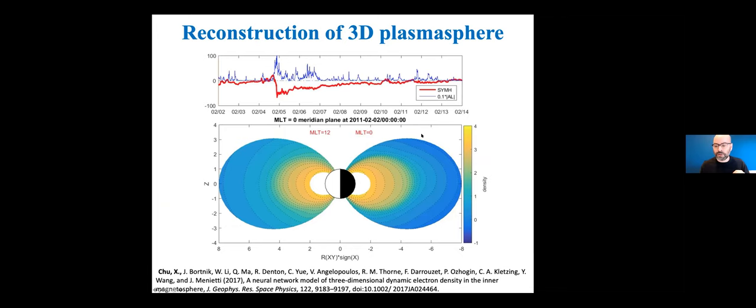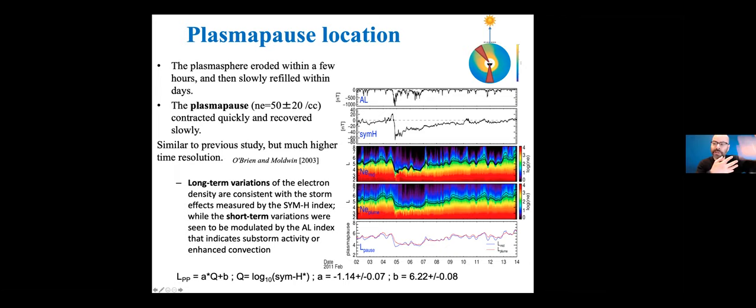Another thing you can do is just track the plasma pause, the region between the dense plasma sphere and tenuous outer plasma trough. And this is something that has been done in the past, but we did it with our model as well. And you can see that we fit a model to the plasma pause of the form A times Q plus B, where Q is the log of the SimH of the storm here. And we get these A and B coefficients, which are in very close agreement to previously published values. So this just comes out of our model.